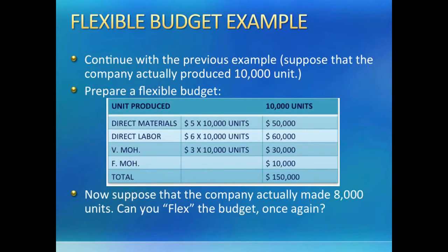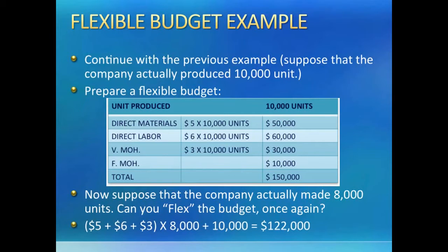So if you are asked to make a flexible budget for 8,000 units, it should be $5 plus $6 plus $3 — $14 of variable cost per unit times 8,000 units — plus $10,000 of fixed cost. So the flexible budget for 8,000 units should have a total of $122,000. Variable cost per unit remains the same; it just gets multiplied by actual output. The total fixed cost also remains unchanged because fixed costs are planned for the period, not for a specific volume of production.